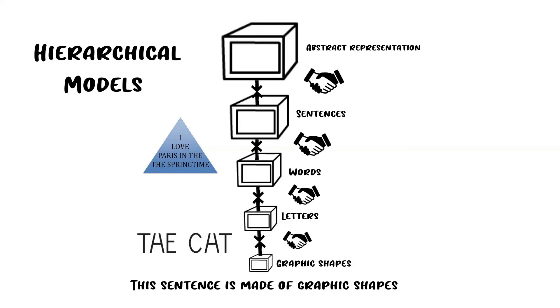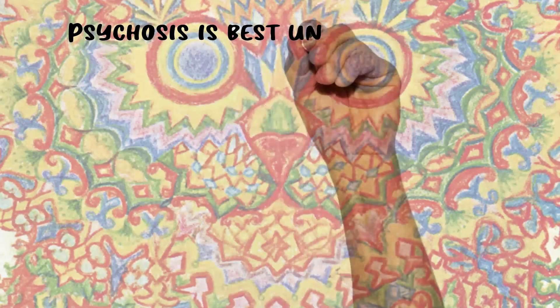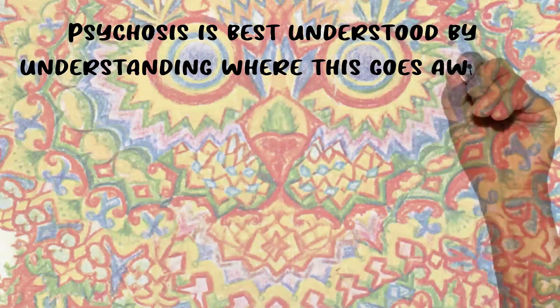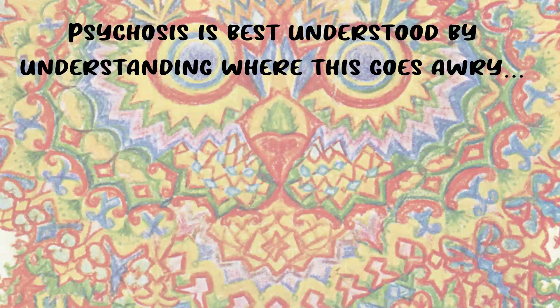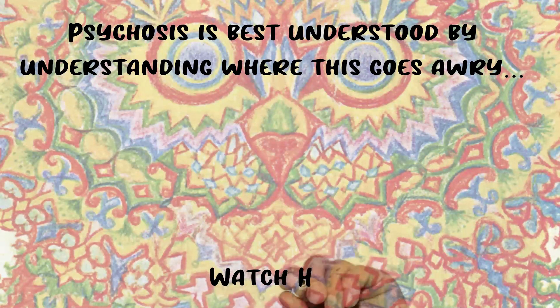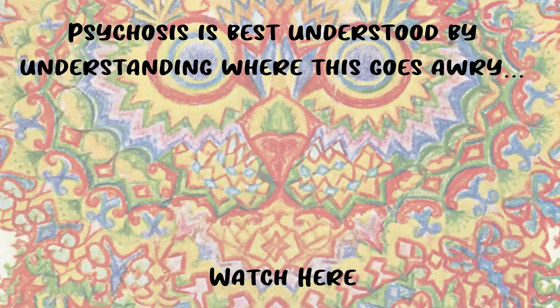Now that we have a better understanding of what predictive processing is, we can better understand psychosis by understanding where this goes awry. I wouldn't stress if there was anything that you didn't really understand here or didn't make a ton of sense. The hope for this video is not for you to understand exactly how these things work, but just to get a feel for what's going on with predictive processing.